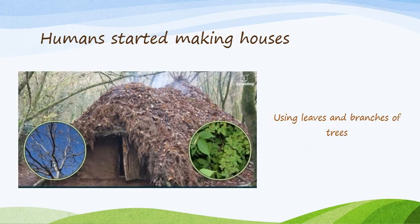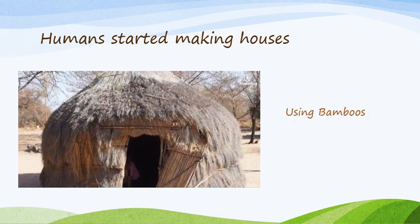Now, we will look at how humans started making houses. After caves, they started making huts. The houses were made up of leaves and branches of trees. As you can see here, this is a hut made up of leaves and branches of trees. There is another hut made up of bamboos. But huts did not protect them from heavy rains, so they thought of something else.